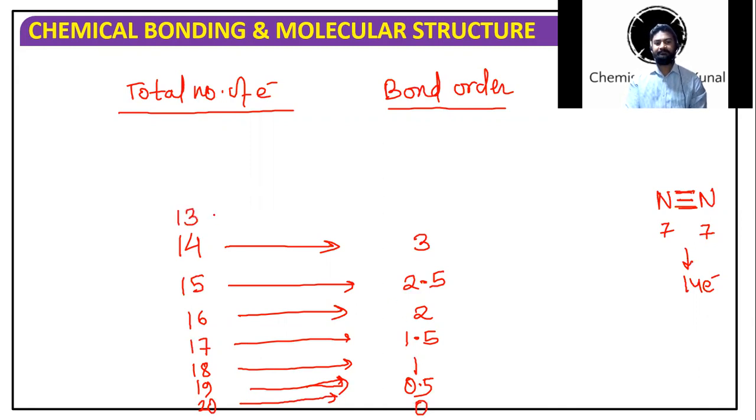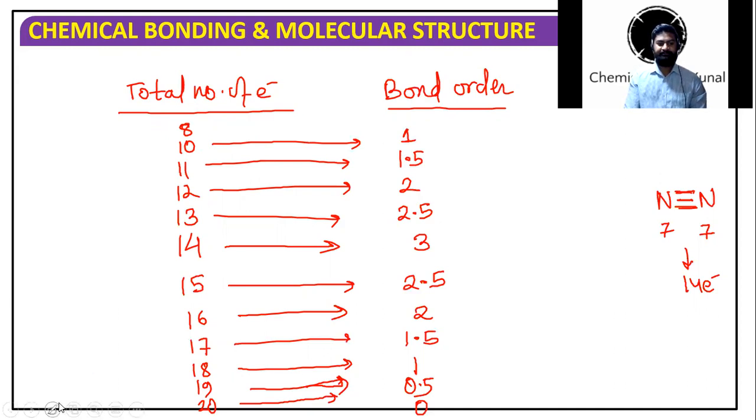Now we go up. 13 - decrease it by 0.5. 12 - decrease it by 0.5. That's 2.5, then 2. 11 - yes, you are absolutely correct, 1.5. 10 - it's 1. 9 will be 0.5. And 8 is 0. That's it.